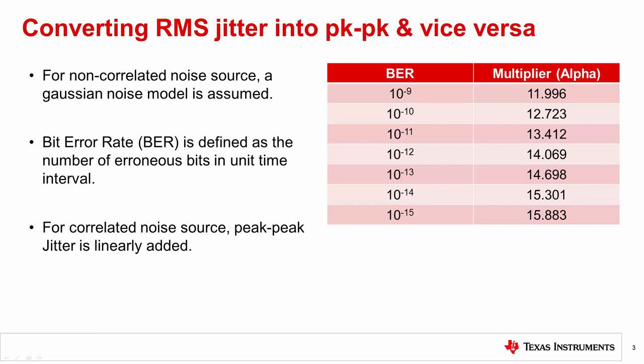Peak-to-peak jitter is the distance between the largest and smallest measurement on the histogram plot. Since random jitter is unbounded, a maximum bit error rate is needed to convert RMS jitter into peak-to-peak jitter. BER, or bit error rate, is defined as the number of erroneous bits in the unit time interval.